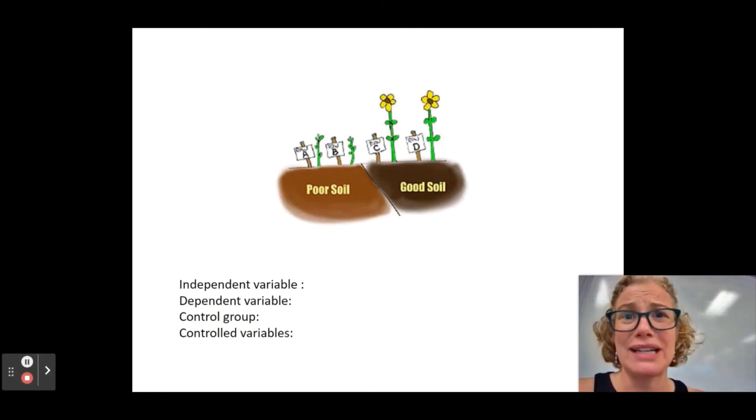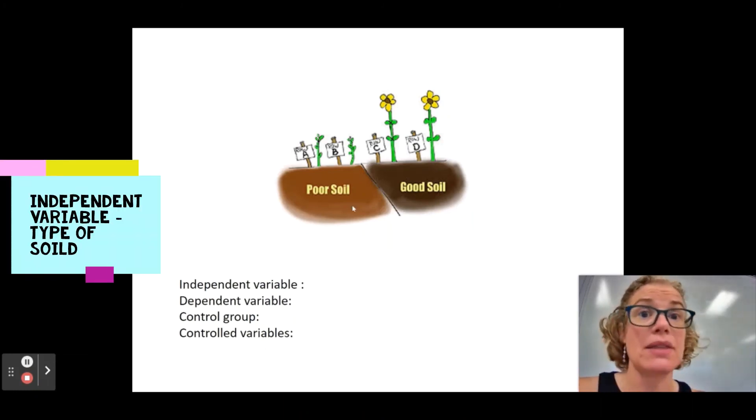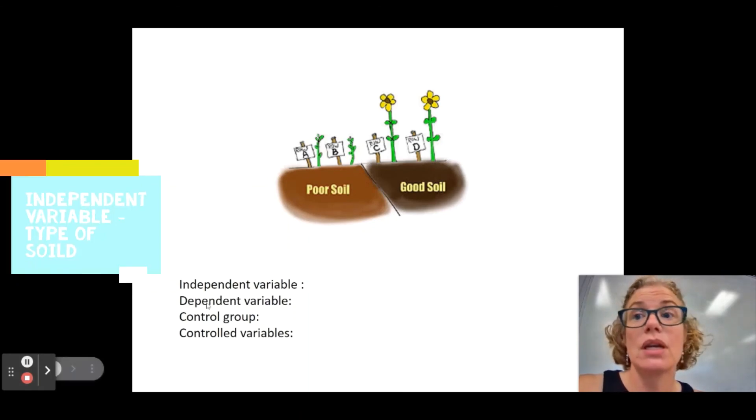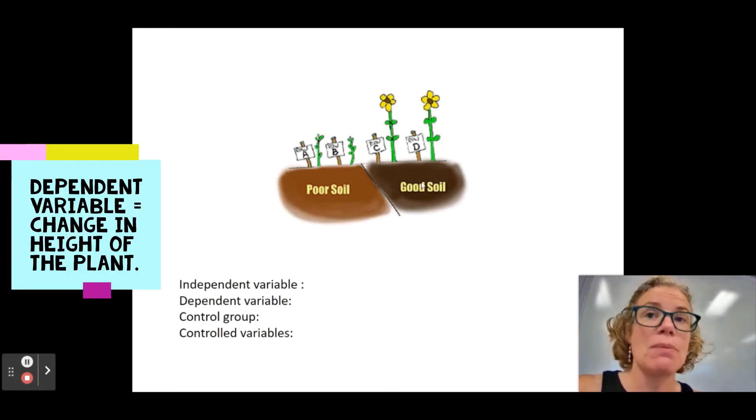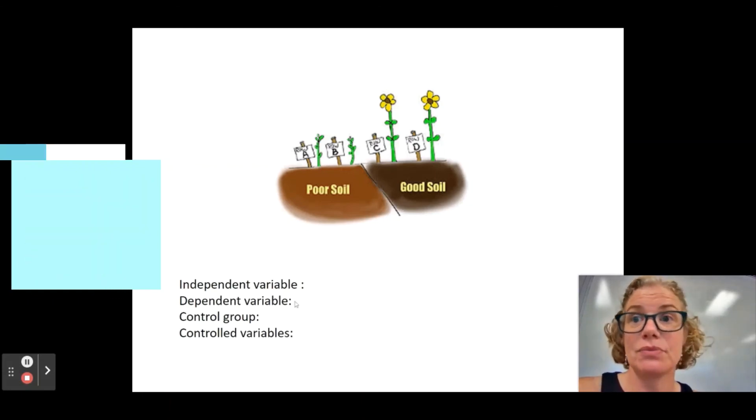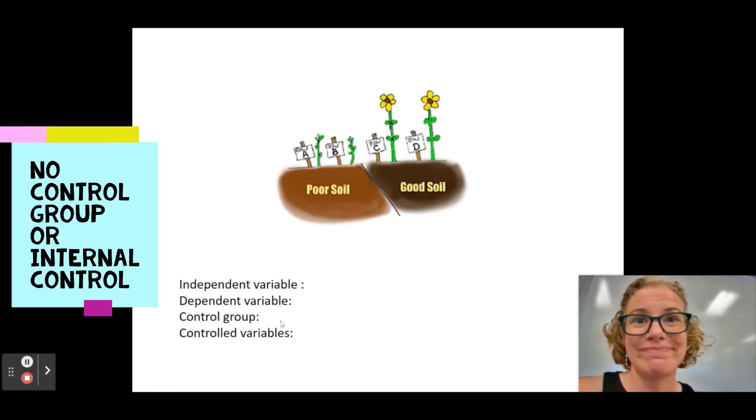And I bet those plants all started as seeds or at least is the same height as one of our controlled variables. So I think independent variable, in this case, is going to be the type of soil. The dependent variable is probably the height of the plants. Control group. I don't think there is one. It's probably an internal control.